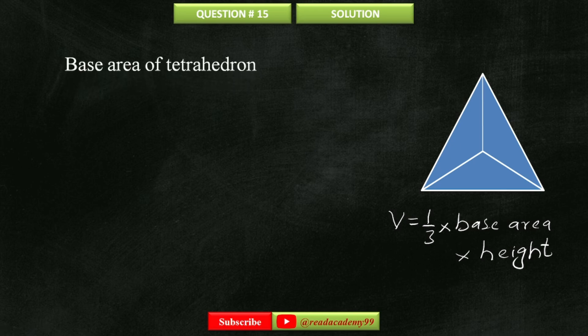Since we have a triangular base, the area of a triangle is equal to 1 by 2 times base times height. The base of this triangle is 8 centimeters and the height is equal to the slant height, which we have just calculated. Multiply these numbers and we have 27.71 centimeters square, which is the base area of the tetrahedron.